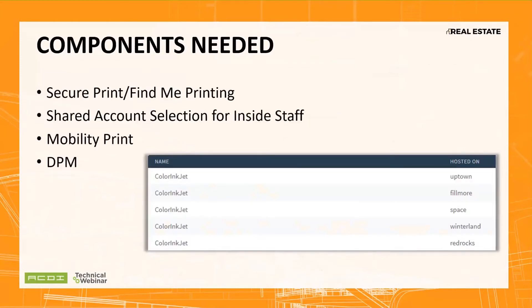The Direct Print Monitor, or DPM, is also on our list of components you may need for a successful real estate implementation. You can see a screenshot of what direct IP queues look like with their respective hosts — this becomes one printer in the PaperCut list, so you can apply filters or report on them as one entity. For more discussion on the Direct Print Monitor, check out the technical webinar from a couple of months ago on the legal vertical posted on our YouTube site.